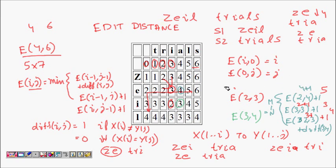We use smaller sub-problems to solve this problem. If you keep filling the table from the top, filling the first row and column trivially, then proceeding left to right and top to bottom, you arrive at the final value which tells you the minimum number of operations to convert one string to another.